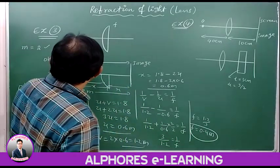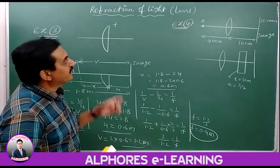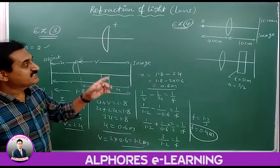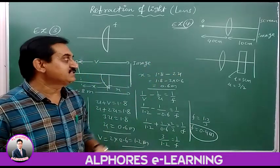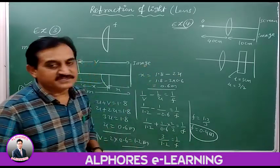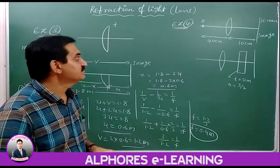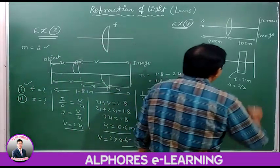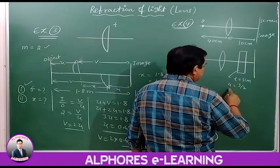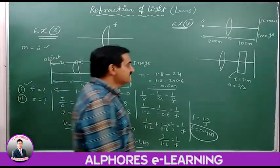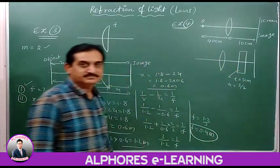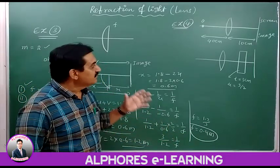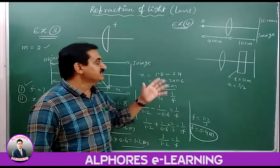So the separation between the two lens parts is 0.6 meters. This is an important problem from a previous IIT question. Now for the next problem: a convex lens has an object placed at 40 centimeters distance, and a screen is kept at 10 centimeters from the lens. A glass plate of thickness 3 centimeters and refractive index 3/2 is introduced between the screen and the lens.